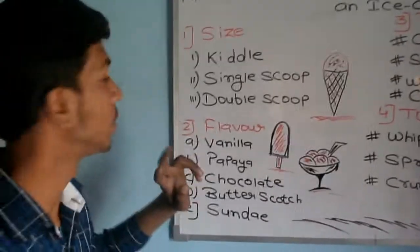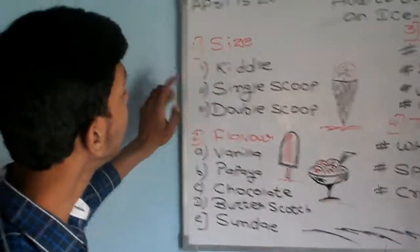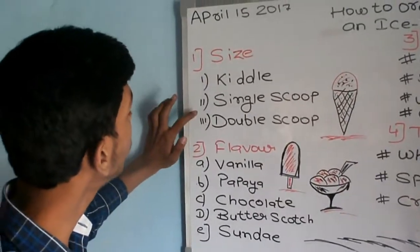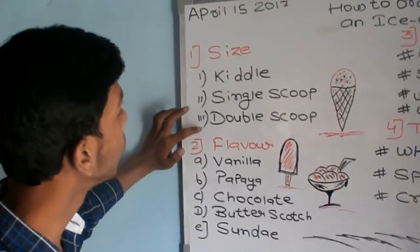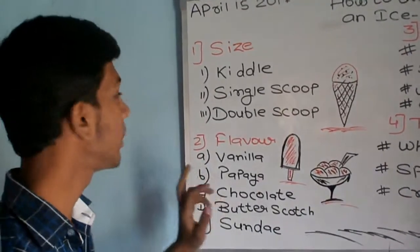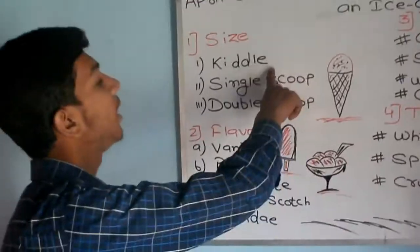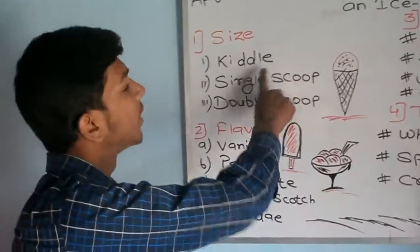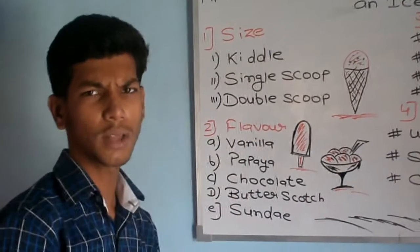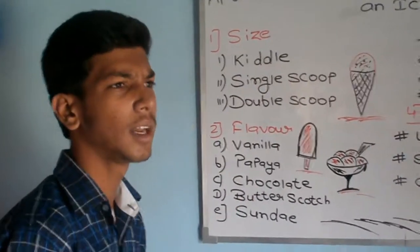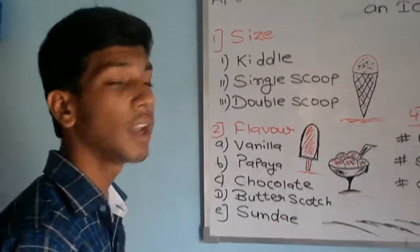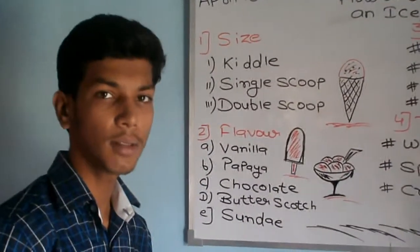There are three sizes. One is a kindle, one is a single scoop, and one is a double scoop. The first one — kindle — is actually small. If you have a child with you, or if you just want a small ice cream, you can use a kindle.